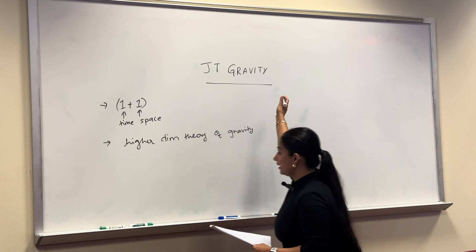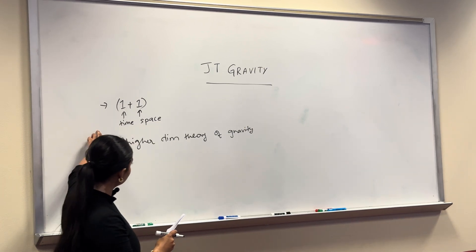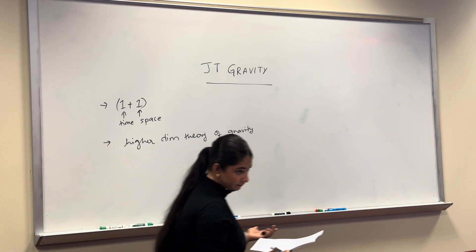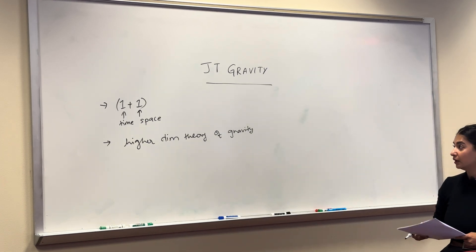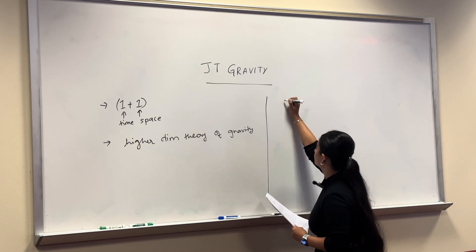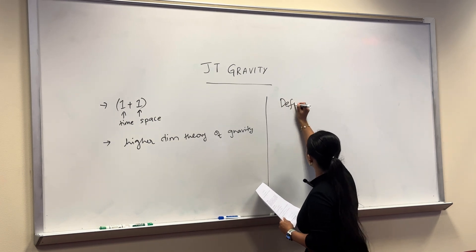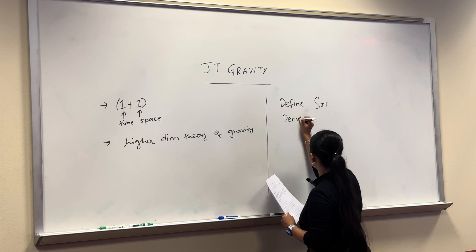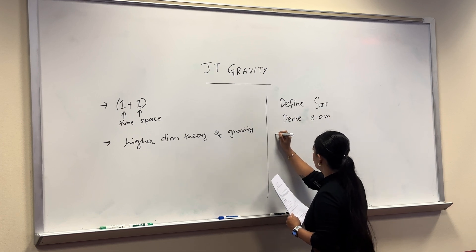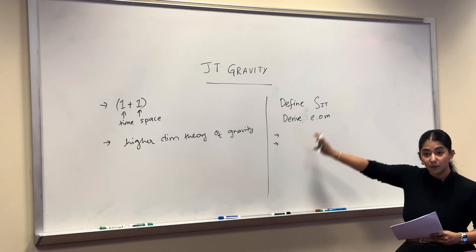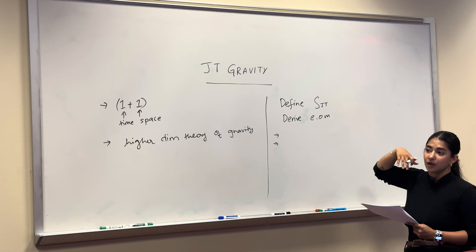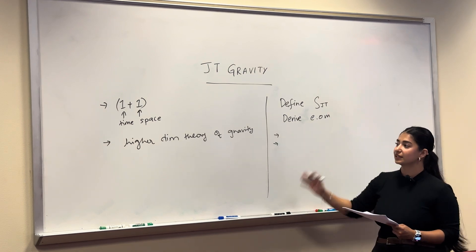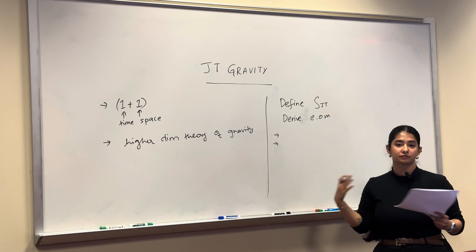Why is JT gravity very popular? Because of this, it has become very popular in understanding different aspects of theoretical physics like AdS-CFT and black hole thermodynamics. So today I will try to define the action for JT gravity, derive the equations of motion, and give you how we can use this in a few examples. I will give you two applications where we use this, maybe more than two, but I will try to explicitly explain why two of them work very well.